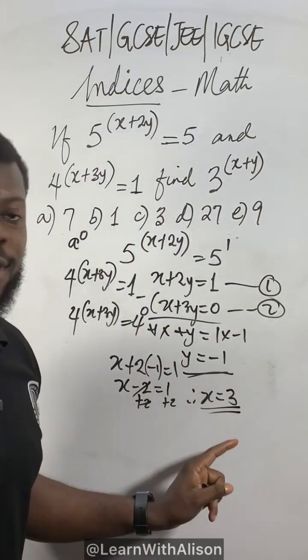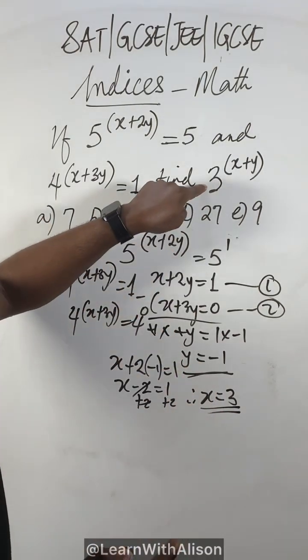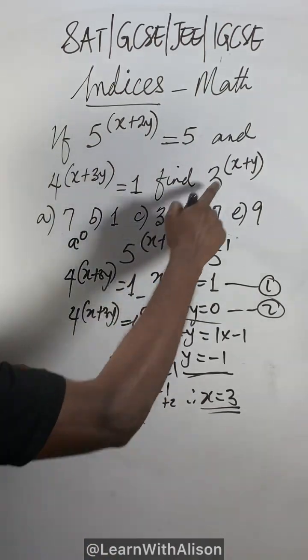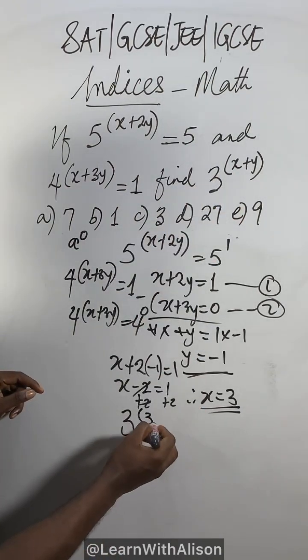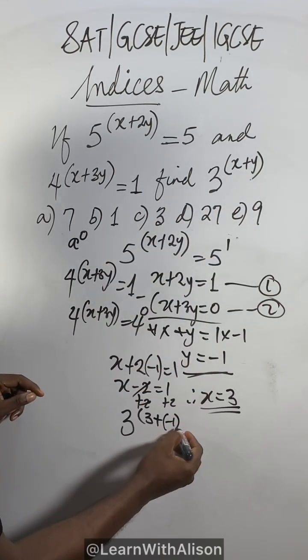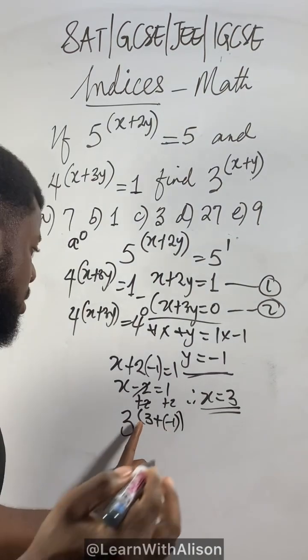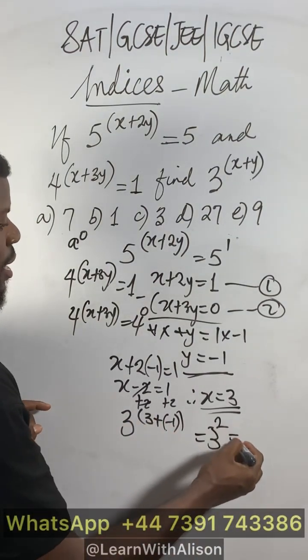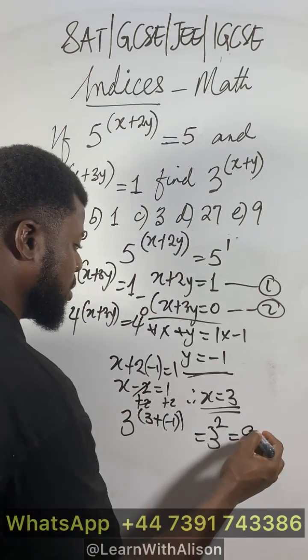I've gotten the value of x and y, so let's plug this into this particular expression. So we're having 3 into, in place of x we just have 3 plus, in place of y we just have negative 1. You already know that plus minus is minus. 3 minus 1 will be 2, so we have 3 to the power of 2, and 3 to the power of 2 will be 3 times 3 which is 9.